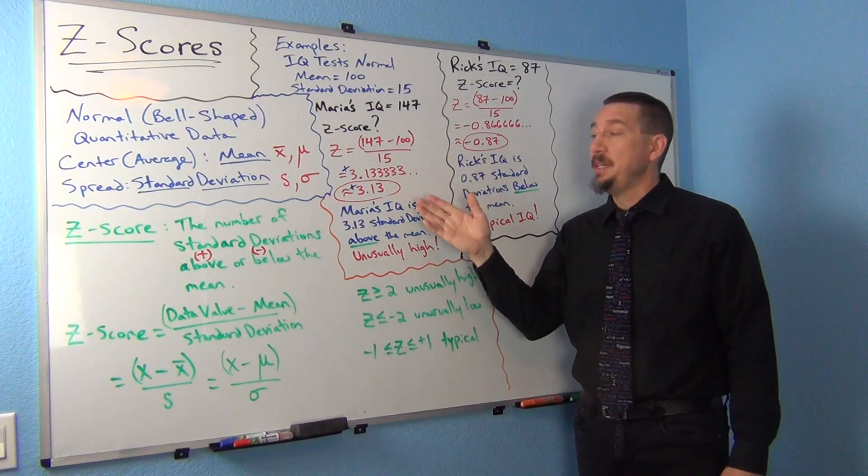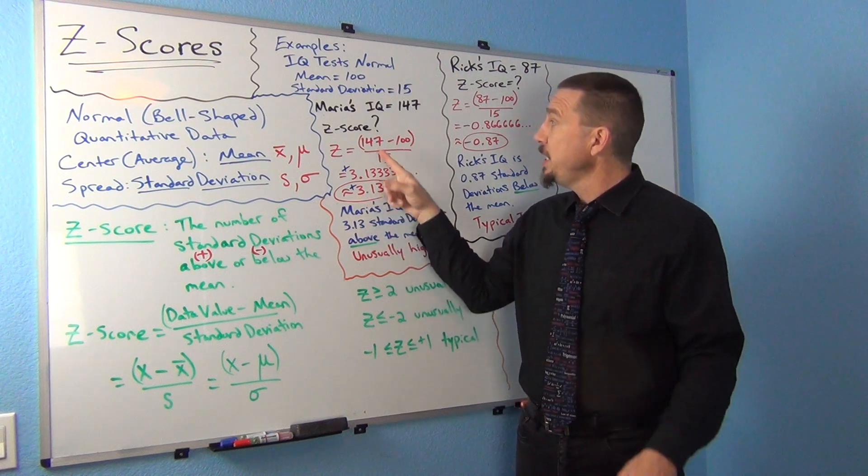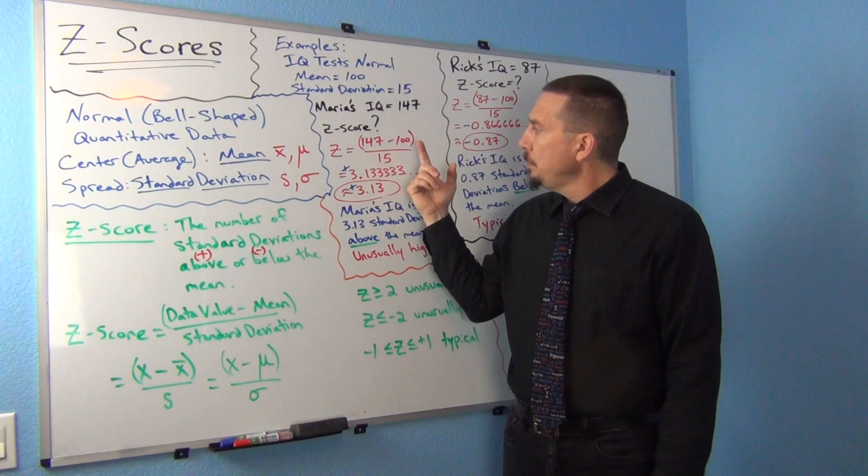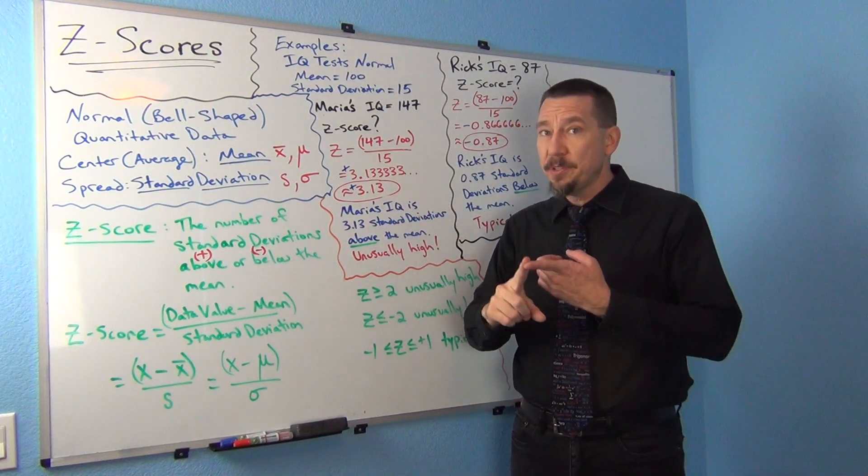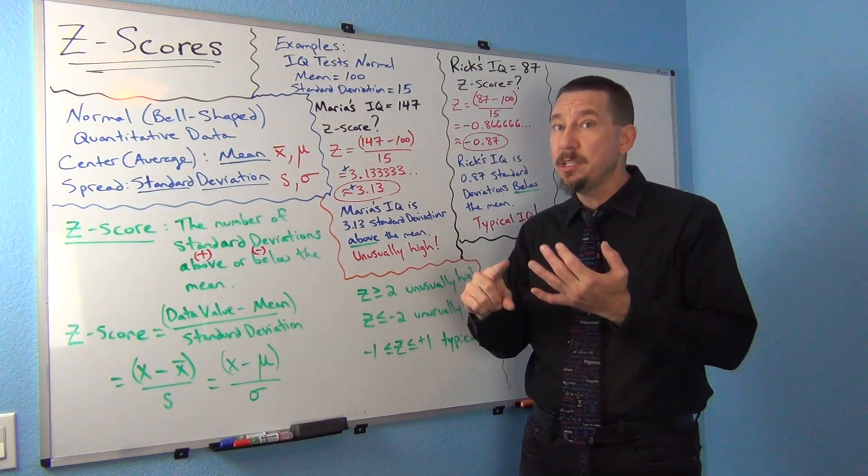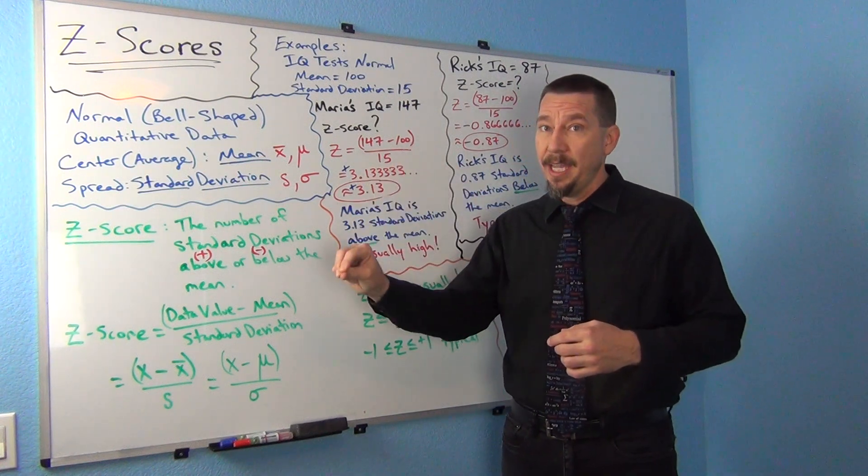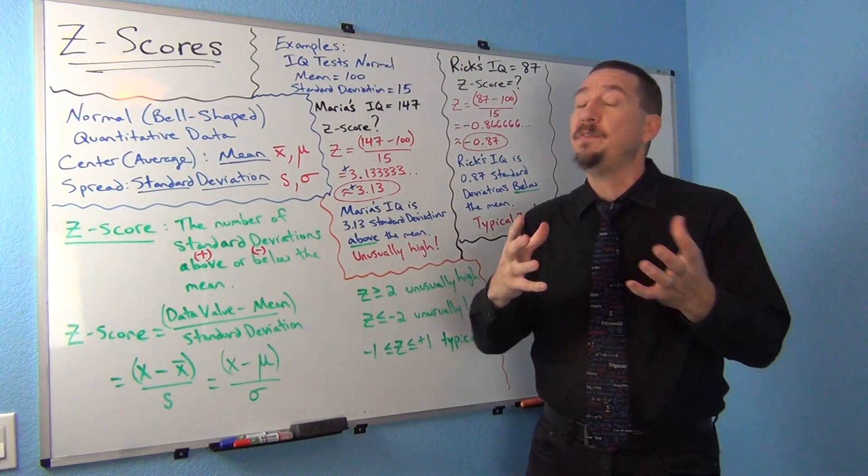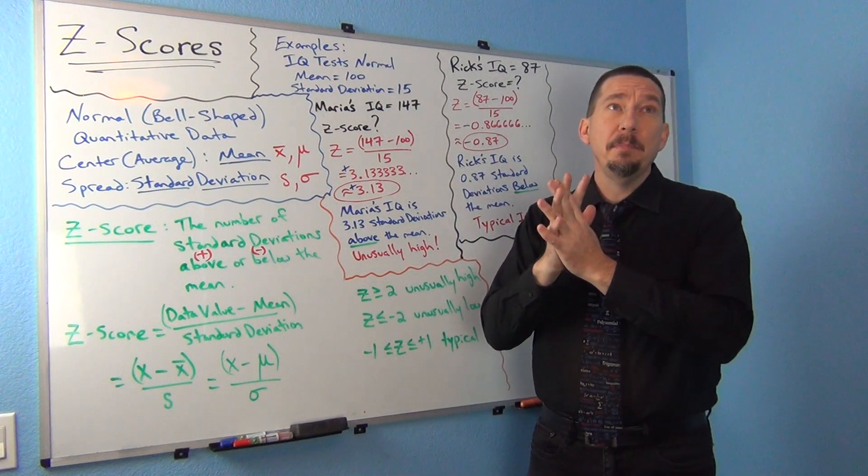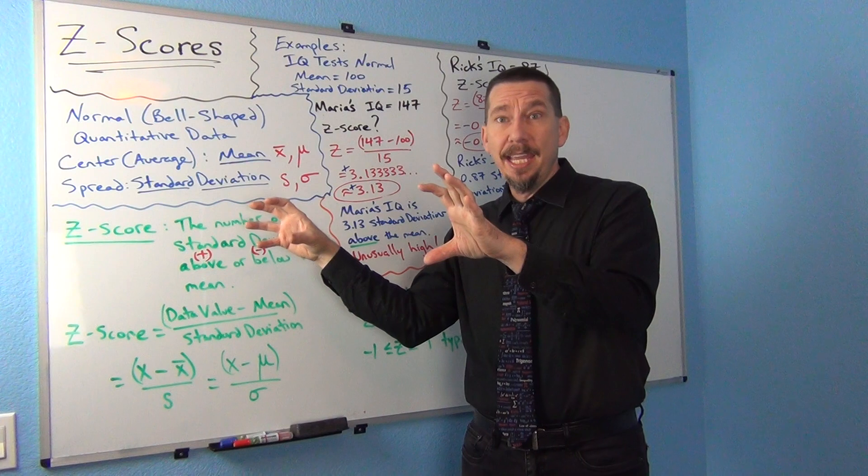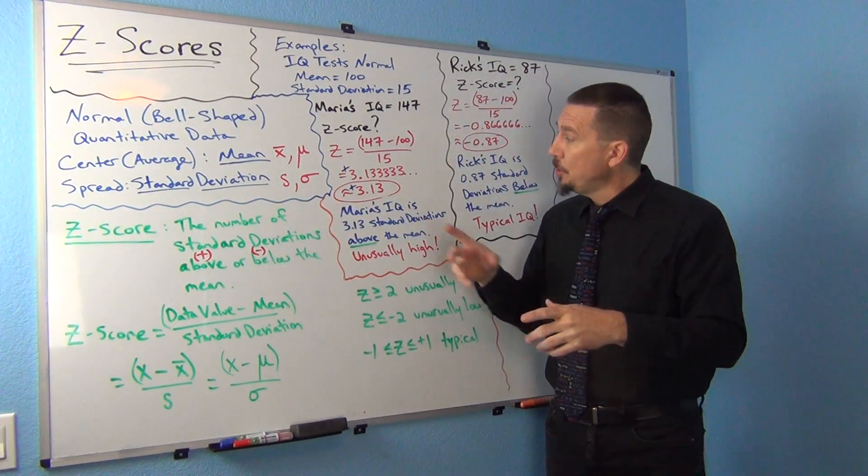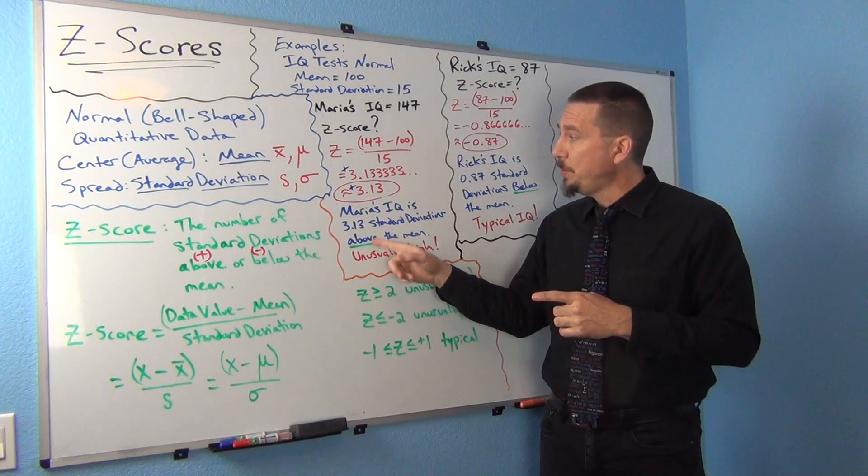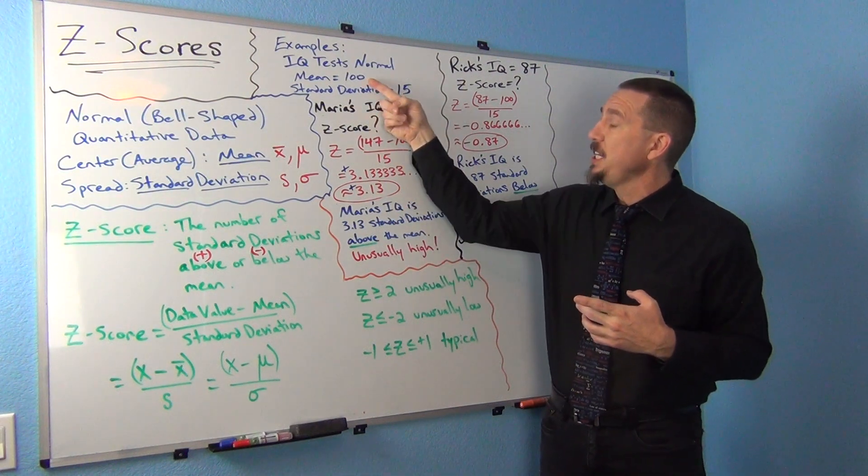Now, the more important part is what does this mean? First of all, notice the Z-score was positive. That means Maria's IQ was above the mean, above the average. Positive means it's above. But remember, a Z-score is not a percentage. It's not kilograms. It's not dollars. It's not miles. A Z-score is number of standard deviations. That's why we often call it a standardizing score. It's a way of comparing things when you may not understand the physics involved in some data that maybe you got, but if you understand in terms of number of standard deviations, then you can still get an idea of what's going on. So Maria's IQ is 3.13 standard deviations above the mean. That would be how I would explain it. Notice I used the word above because my Z-score was positive and obviously Maria's IQ was above the mean.